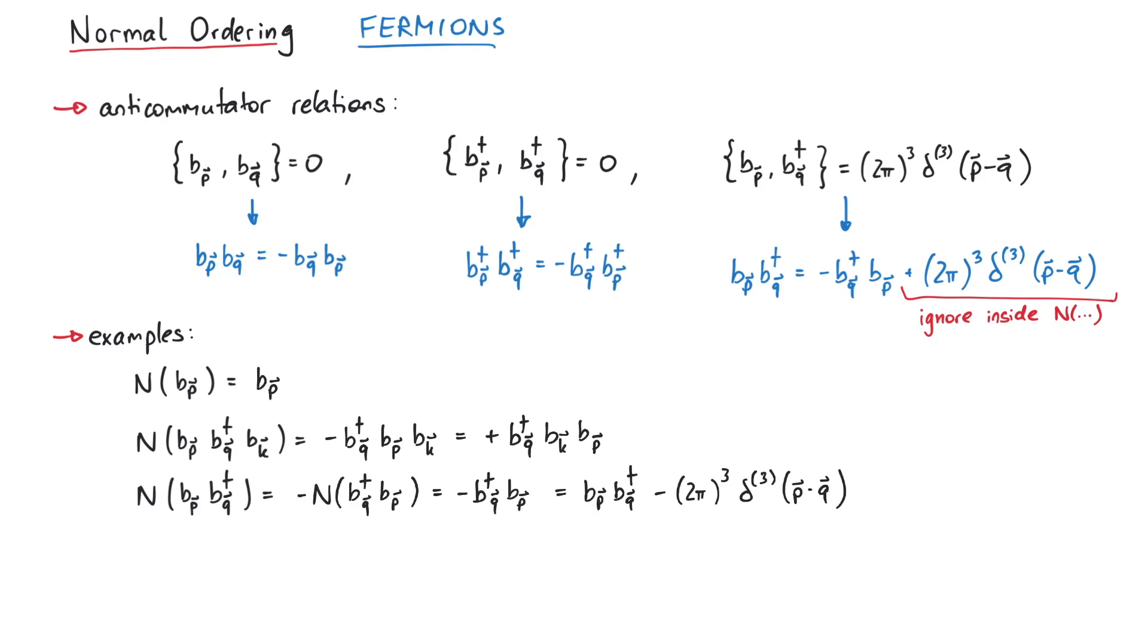Let's look at the last example. Here we can see again that even though we're dealing with one b and one b-dagger, we ignore the canonical anti-commutator relation inside the normal order product, but we have to include it outside the normal order product. And that's pretty much it for this video.